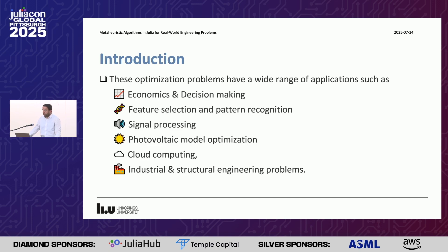Optimization is everywhere — from economics, decision-making, feature selection, and pattern recognition. It can also be found in signal processing, photovoltaic model optimization, cloud computing, and industrial structural engineering problems.